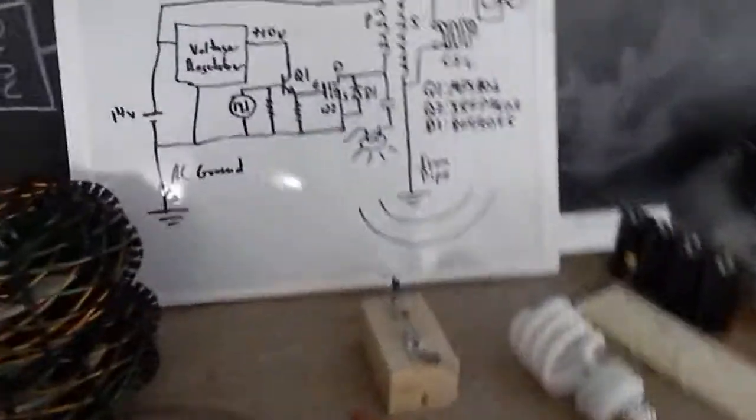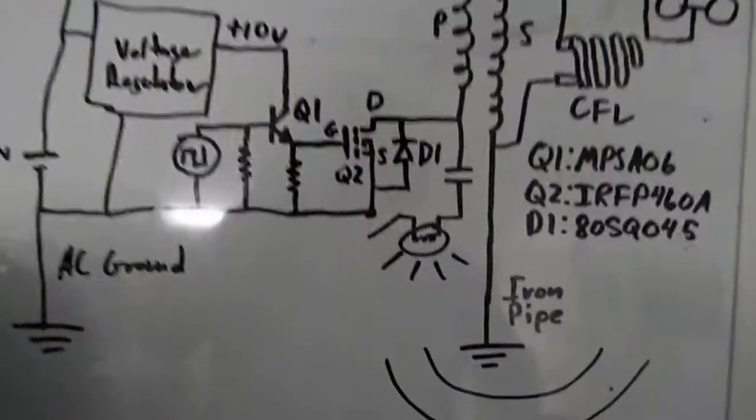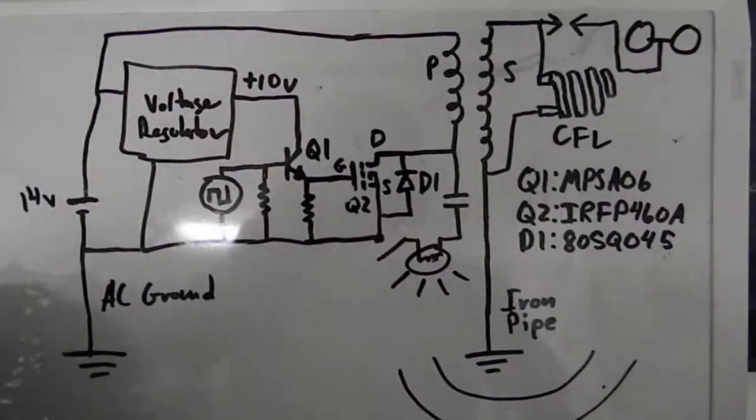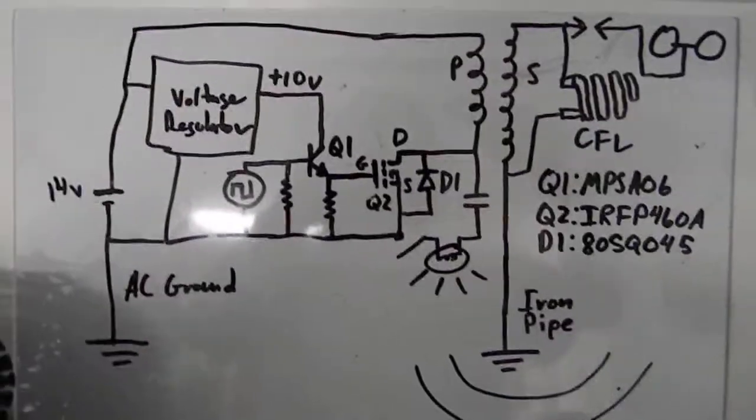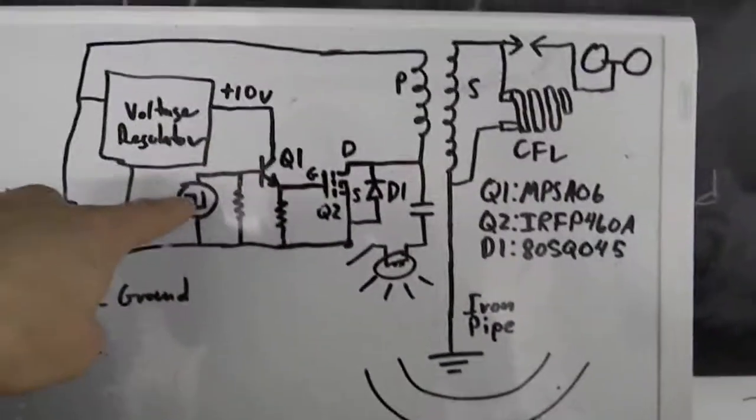Alright, so this is my driving circuit. Got a voltage regulator. This is where my signal generator comes in.